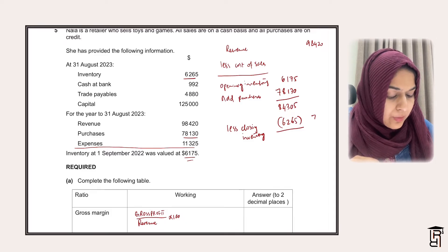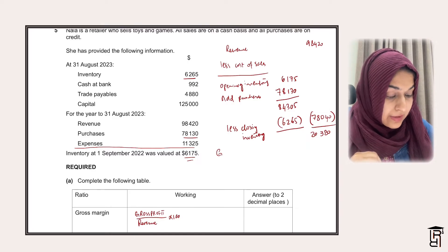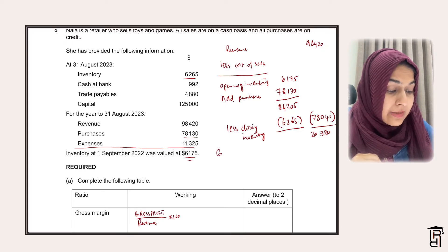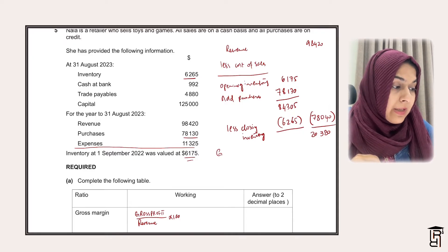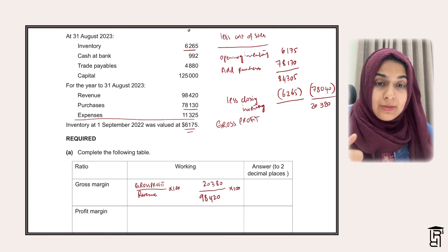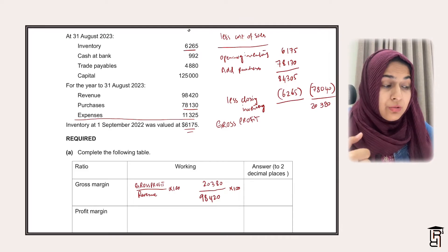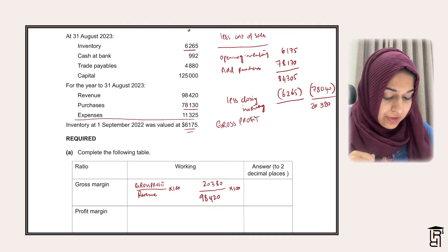So gross profit is 98,420 minus 78,040 = 20,380. Applying the formula: 20,380 divided by 98,420 multiplied by 100 gives 20.71%. That is the gross profit margin.